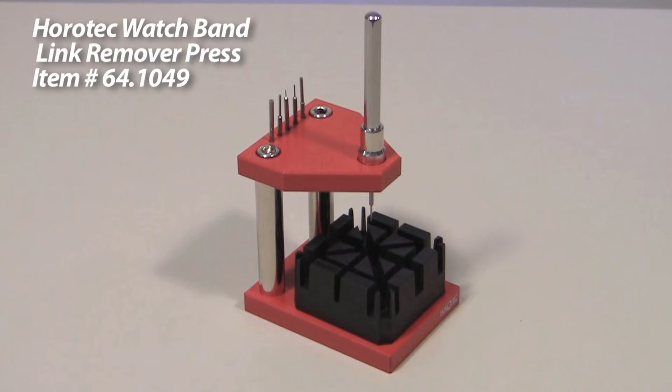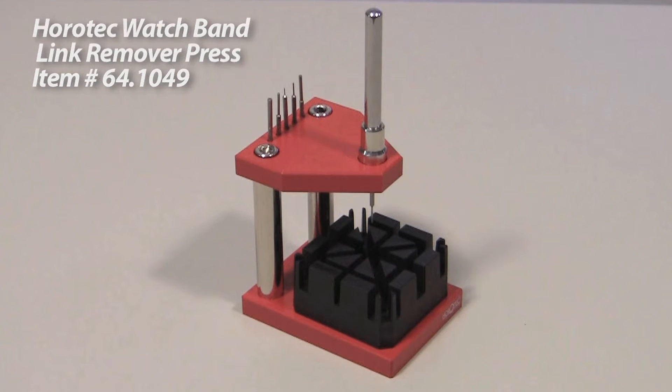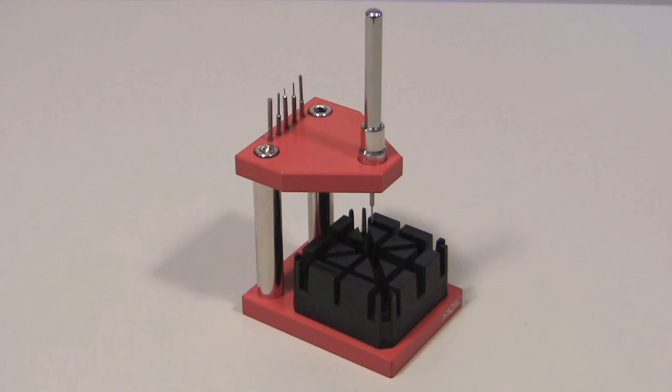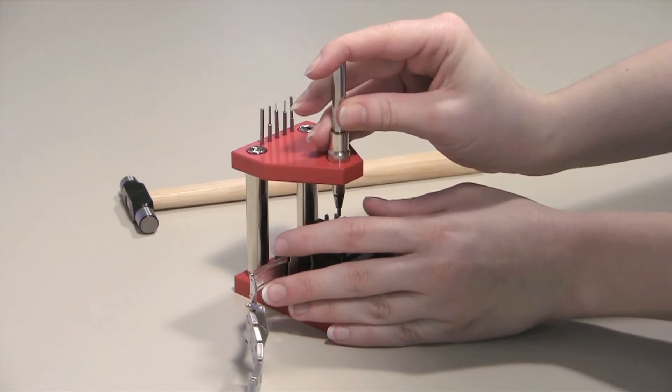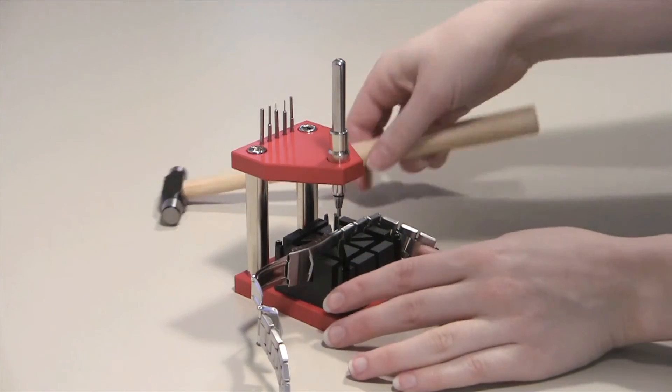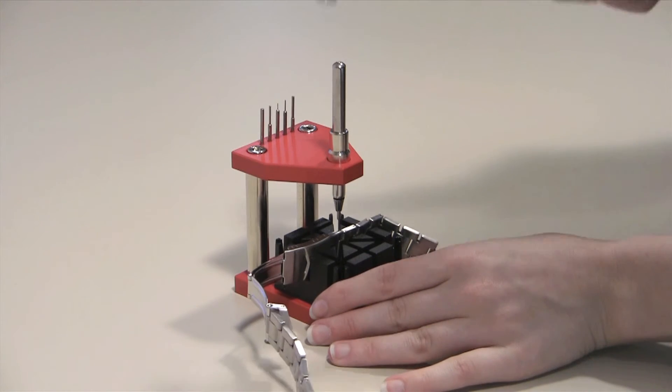It was designed to make removing and replacing friction fitted bracelet pins, cotter pins, and solid link pins a breeze. With the different sized tips, you'll always have the tool to adjust the metal watch band you are working on.